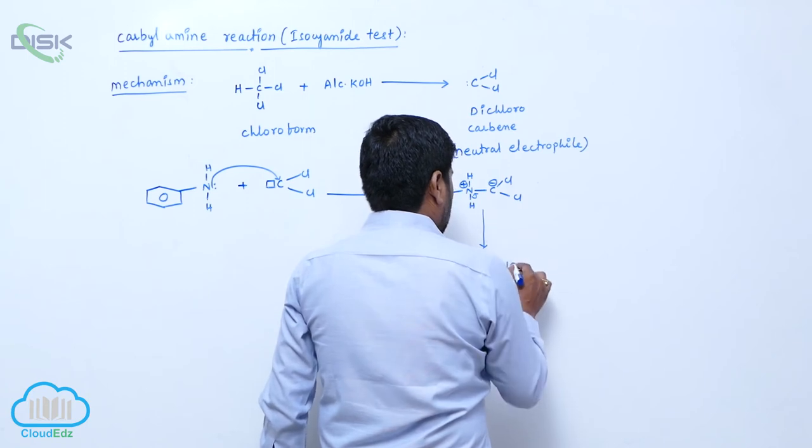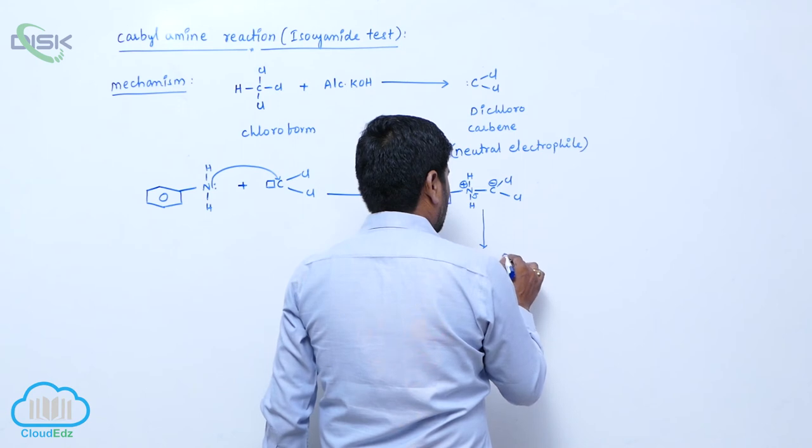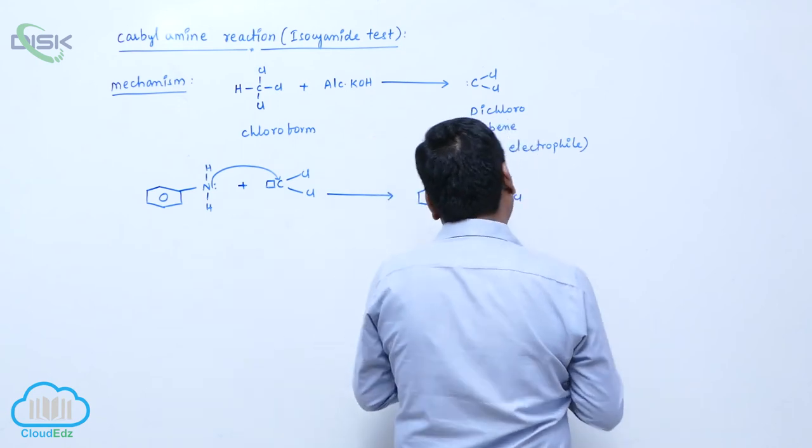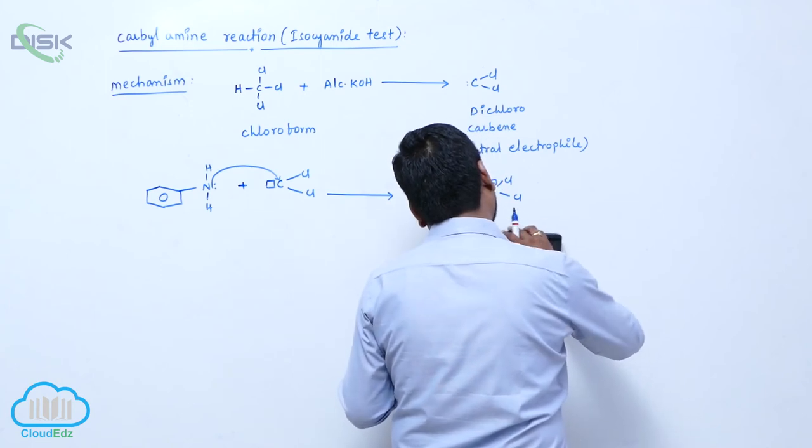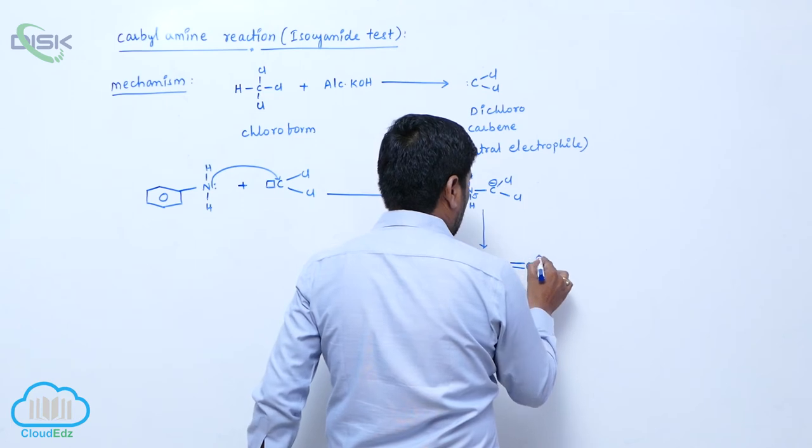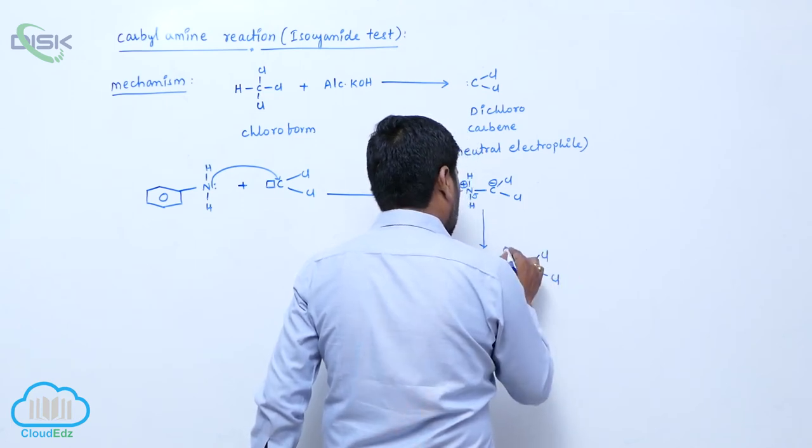This negative charge forms a double bond. C1, then here carries which charge, double bond, then Cl here is also what? Cl. Then hydrogen.